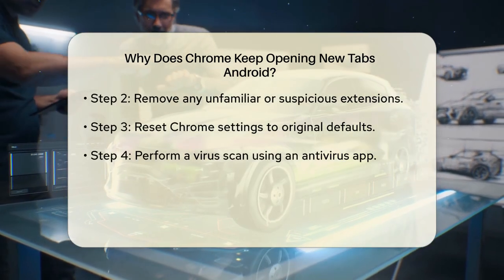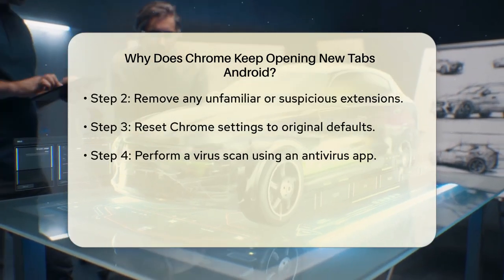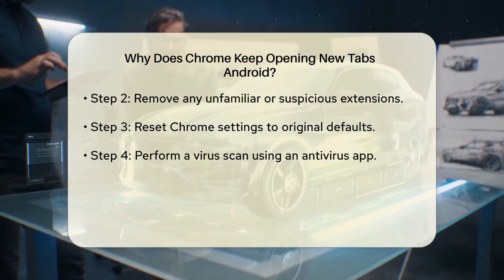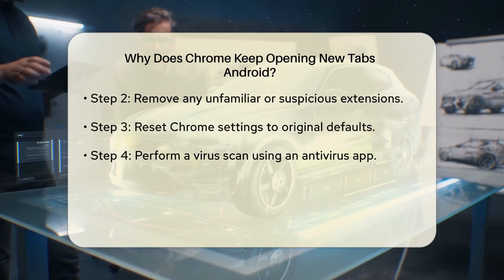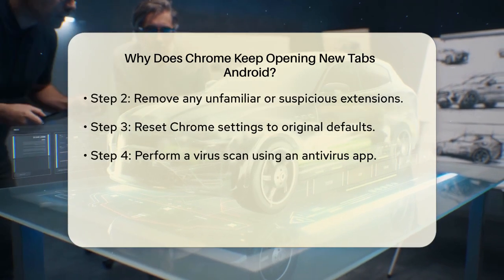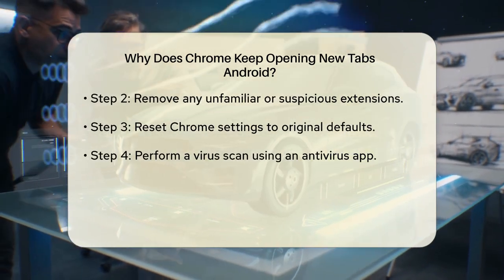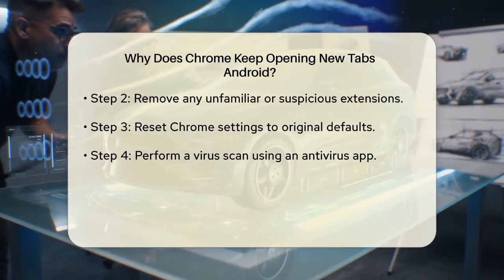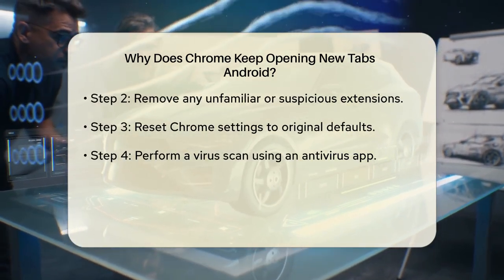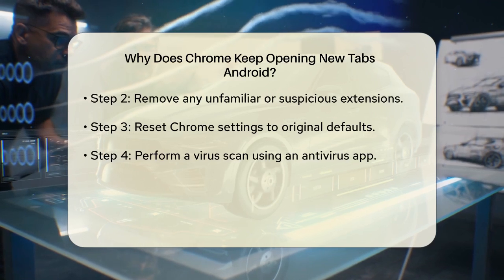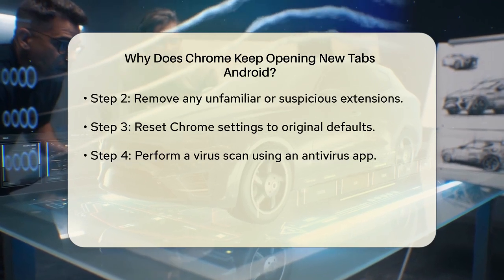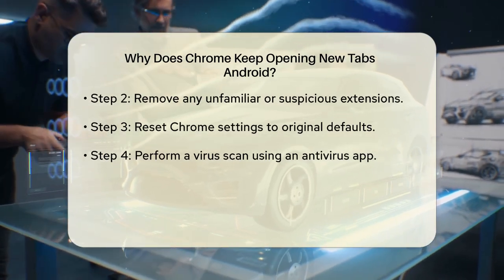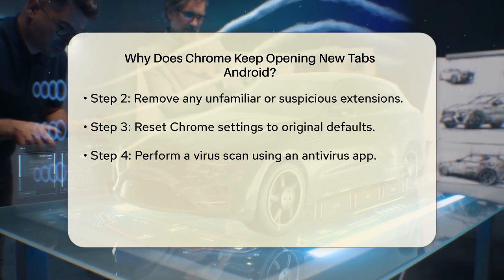Next, reset your Chrome settings to their original defaults. In the Chrome settings, scroll down and select Advanced. Then find the option to reset settings to their original defaults and click on it. This will remove all extensions, clear browsing data, and restore Chrome to its default state.